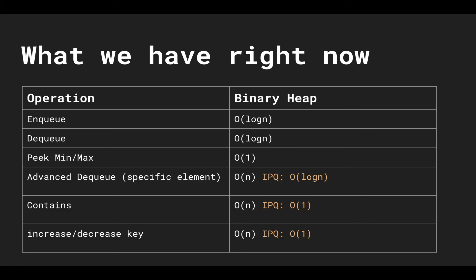So in white is the time it takes right now for our current existing implementation. Advanced dequeue, which is removing a specific element, takes linear time. Contains, which checks to see if a specific element is in our binary heap, takes linear time as well. And increasing and decreasing the key also takes linear time because we have to find where that element sits in our array representation of the tree. With the indexed priority queue, we can get the orange times: logarithmic for advanced dequeuing, and logarithmic for increasing and decreasing the key — not constant, because we still have to sink or swim potentially.